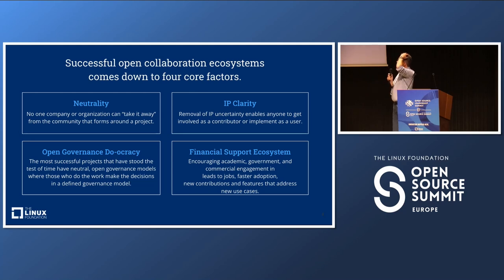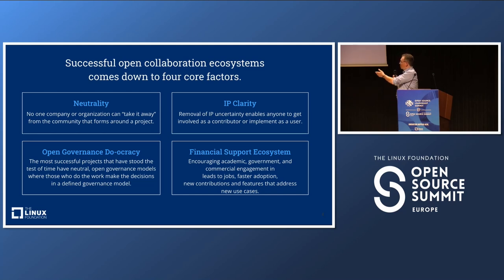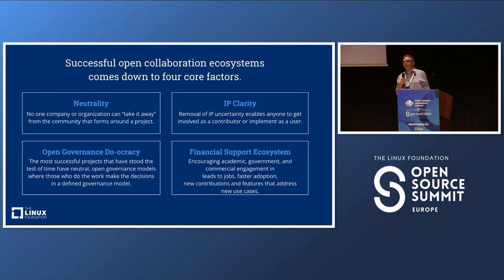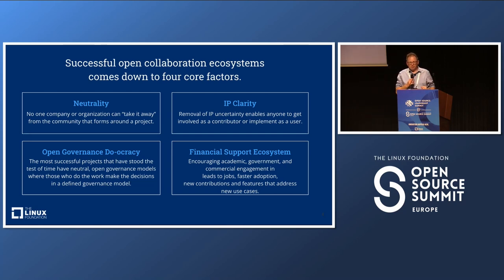To provide a little more granularity: neutrality means a structure where no one company can take control of project assets. IP clarity means clearly stating what the licenses are that you'll be contributing under and that the code will be available under. Open governance and duocracy means people can participate and earn technical roles through hard work. Financial support — most projects don't require funding, but some reach a point where resources are needed to continue growing, and a mechanism for financial support can be very helpful in sustaining the project long term.